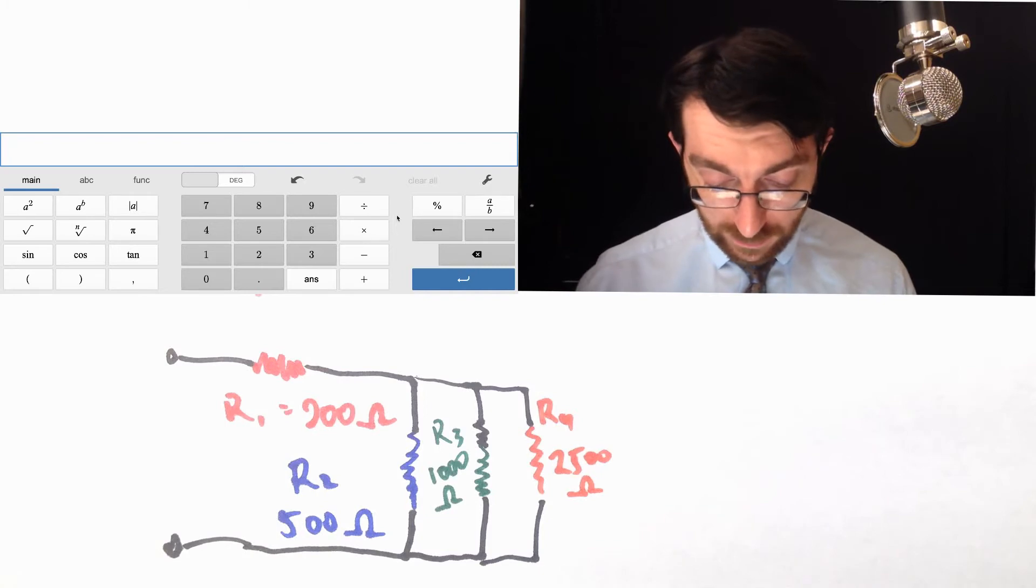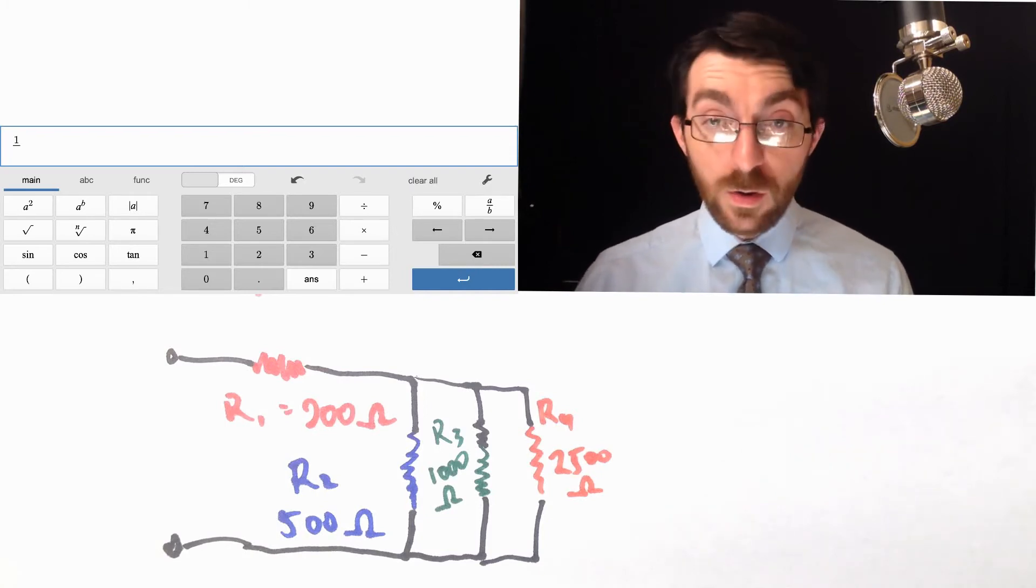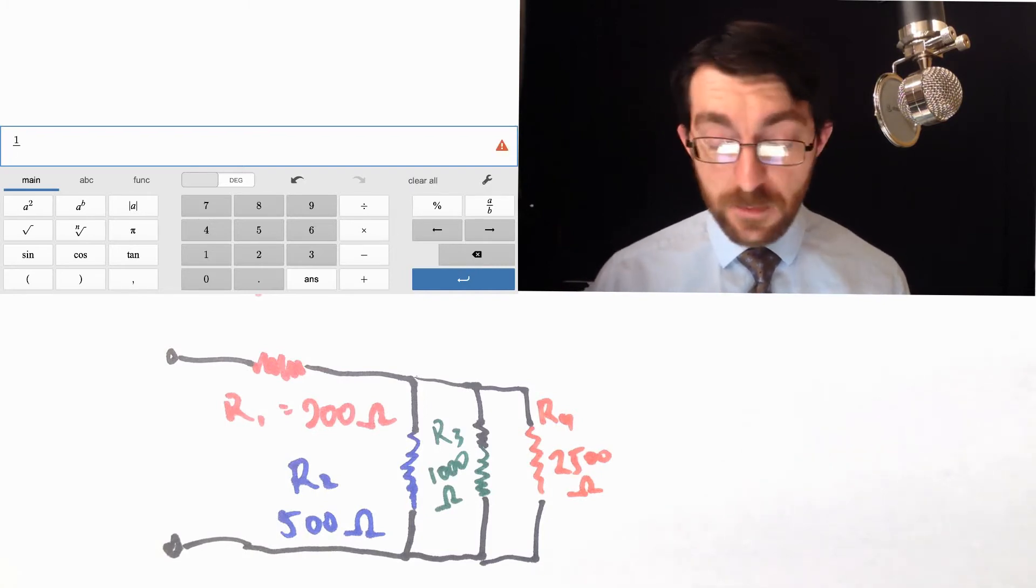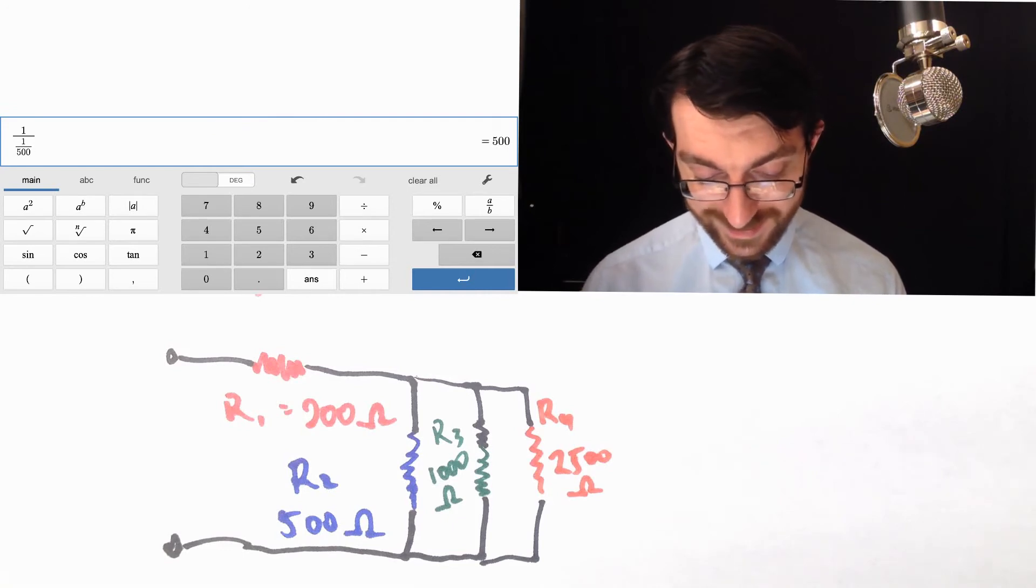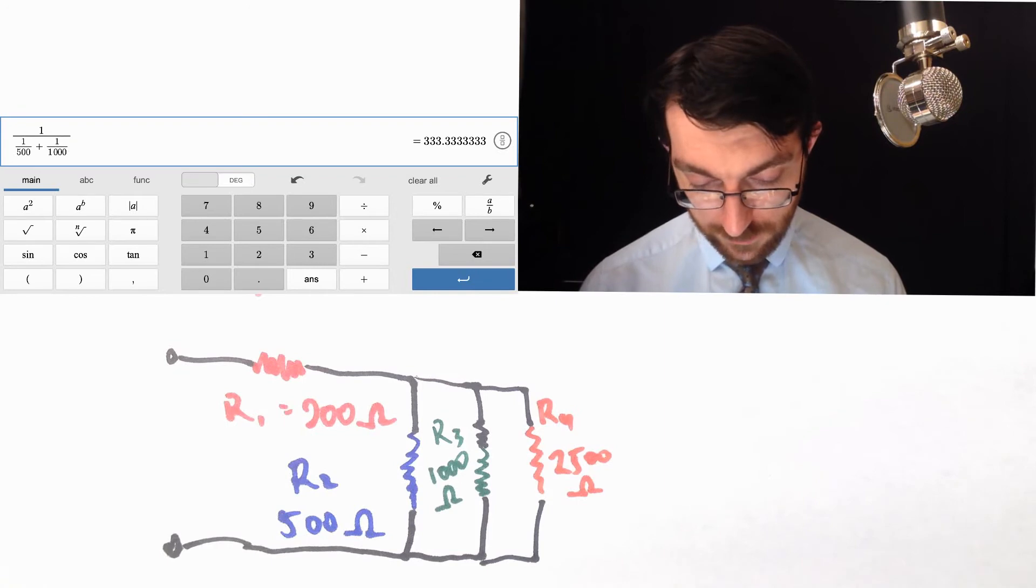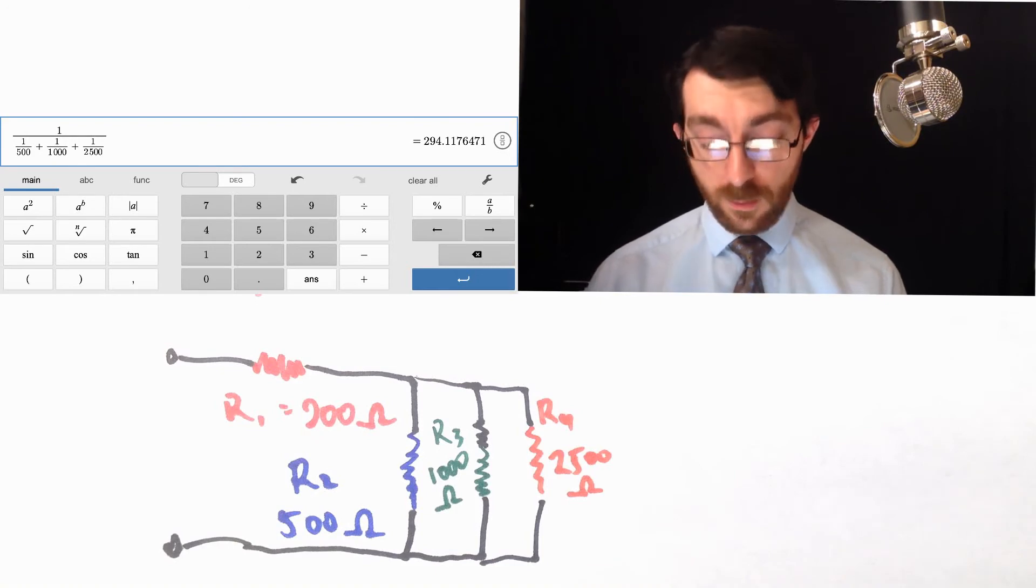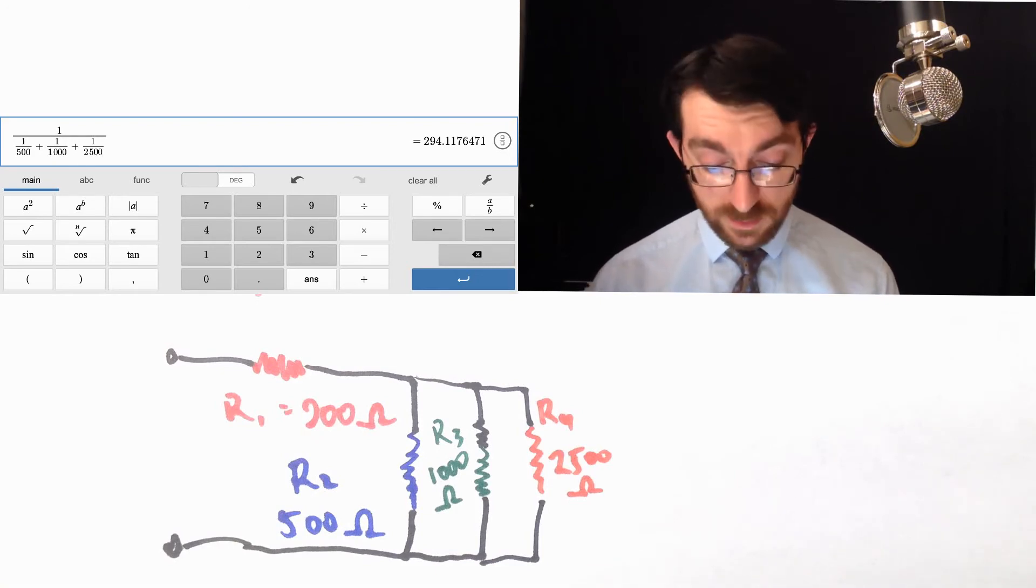So working it out in the calculator, it looks like this, you want to start out with a 1 divided by because your answer is going to be a reciprocal. Might as well just put that in there. Okay, 1 over what? Well, a 500 that is in parallel with a 1,000 that is in parallel with a 2,500, right. So that's how you do that.